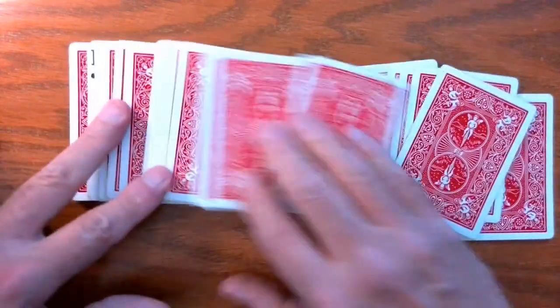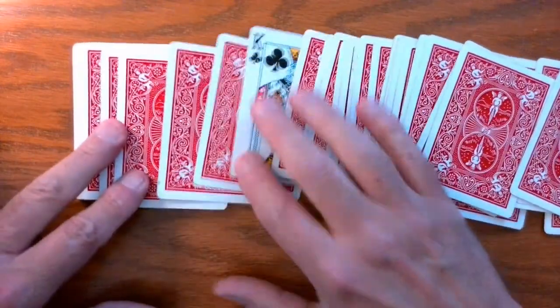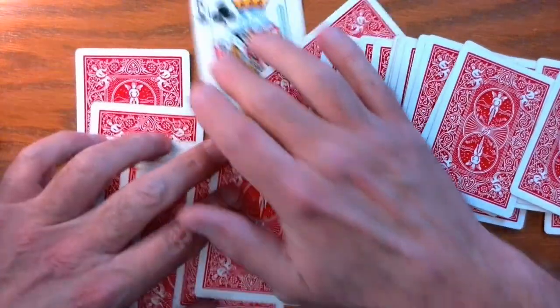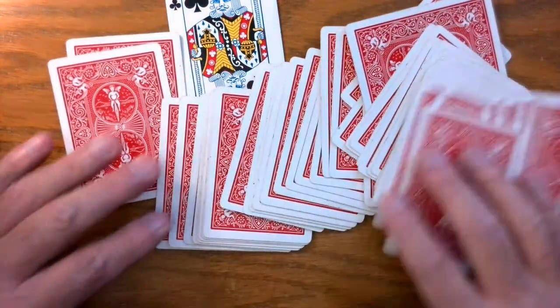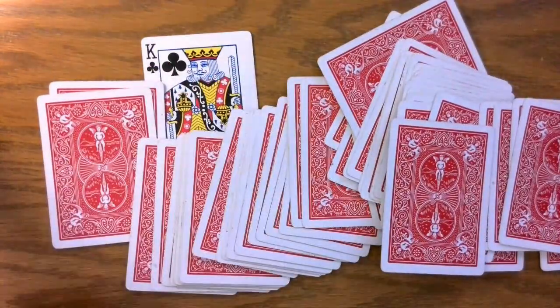Looks like they're all facing the same way. Uh-oh, except for the King of Clubs. It's the only one not facing the same way. That's the trick. Thanks, guys.